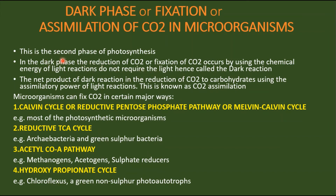The net product of the dark reaction is the reduction of carbon dioxide to carbohydrates using the assimilatory power of the light reaction. This is known as carbon dioxide assimilation — that is, the conversion of carbon dioxide to carbohydrates by using ATP and NADPH is called carbon dioxide assimilation or carbon dioxide fixation. Microorganisms can fix carbon dioxide, converting the inorganic carbon molecule to organic carbon, that is carbohydrate, and assimilate it in certain ways.